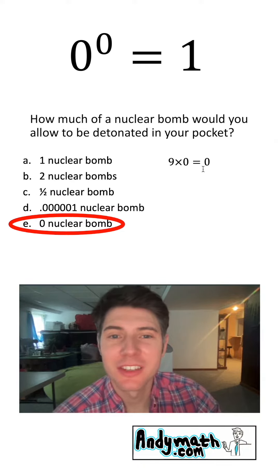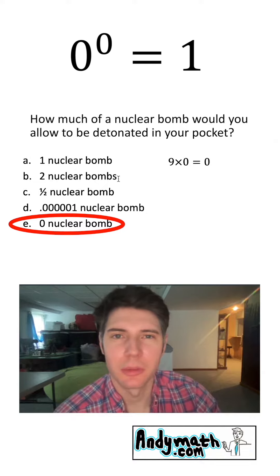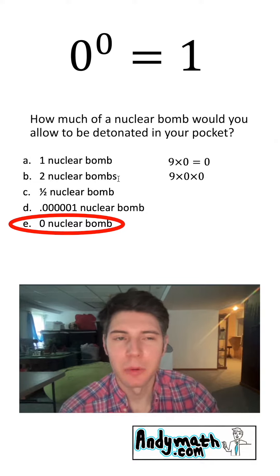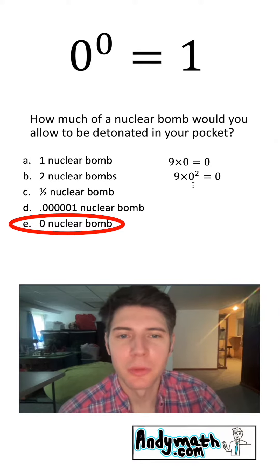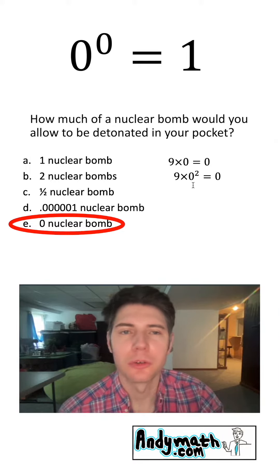I'm proposing this is equivalent to one nuclear bomb. What would two nuclear bombs do? Well, if we have a nine, and we multiply it by zero, and then multiply it by zero again, that's going to give us zero. And another way to express this is nine times zero squared.